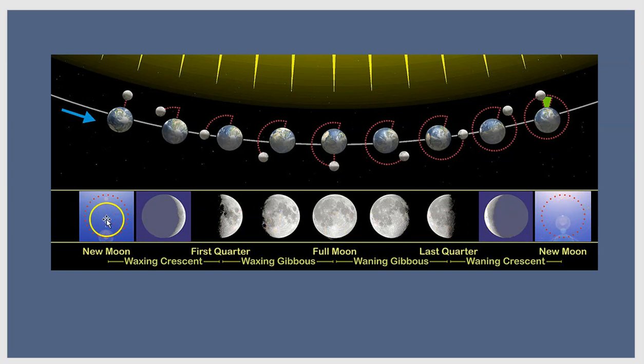Now, these pictures down here show the phases of the moon. So in between a new moon and a full moon, we've got these phases. We've got a waxing moon.